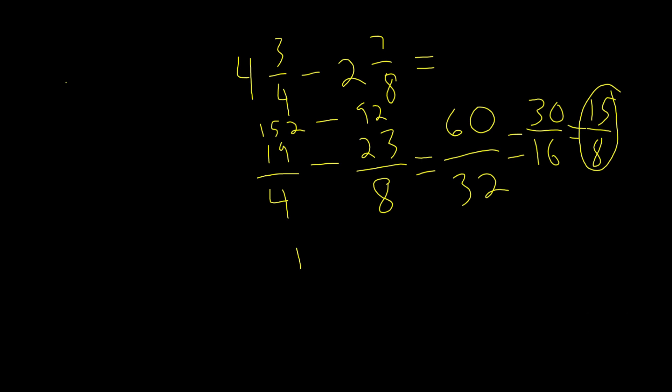I'll also write the mixed number form. So 15 over 8, let's convert this into a mixed number. This equals, what's the most amount of times 8 can go into 15? Once, because if it goes twice, that's 16 and that's over 15. So we write our 1 here, we keep our denominator. 8 times 1 is 8, 15 minus 8 is 7. So our answer in mixed number form is 1 and 7 eighths.